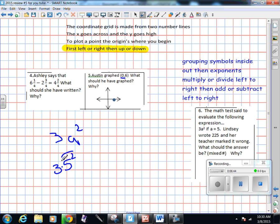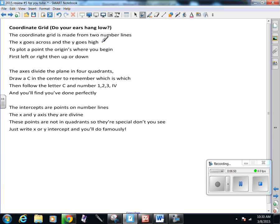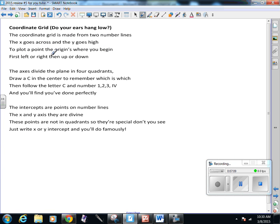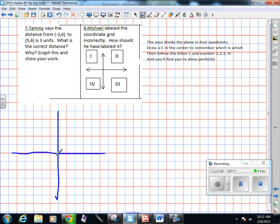Next one, Tammy says the distance from (-2,6) to (5,6) is 3 units. So I'm going to draw a little coordinate grid and I'm going to plot my points. So I remember that first left or right, then up or down, origin's where I begin. So I'm going to start here at the center and I'm going to go negative 2, 6: 1, 2, 3, 4, 5, 6, should be right about here. And then I'm going to go here and I'm going to do 1, 2, 3, 4, 5, 6. And you're being asked to find the distance from here all the way to there.